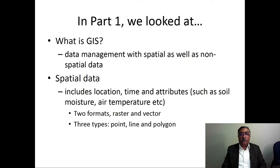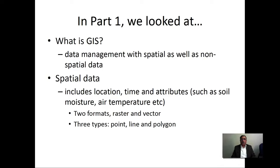In part one we looked at what is GIS. We looked at GIS as essentially a data management activity with spatial as well as non-spatial data. Spatial data includes location, time and attributes such as soil moisture, air temperature and so on. And there were two formats, raster and vector for all spatial data.